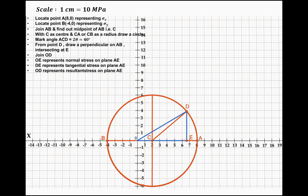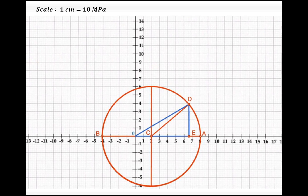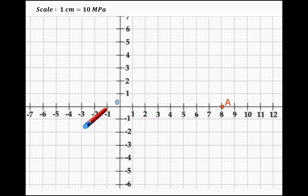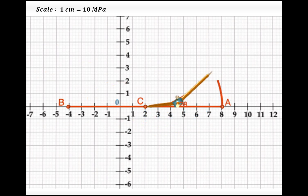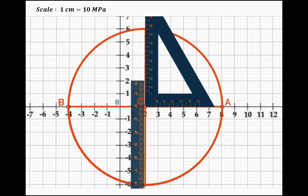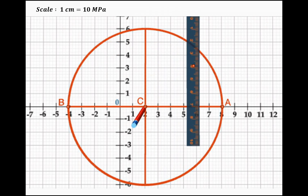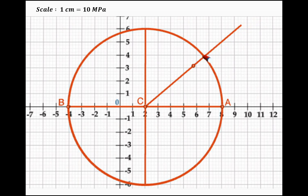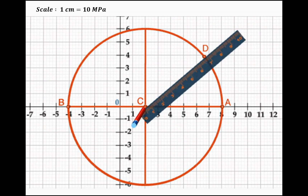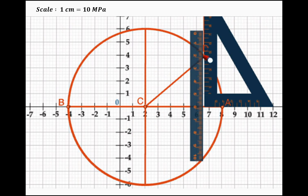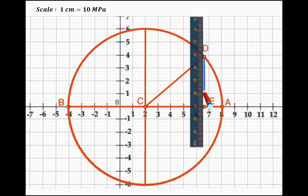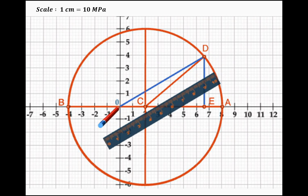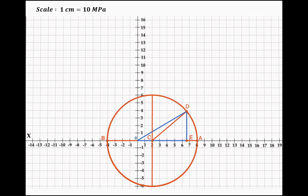Now let us see with the help of animation how to draw this Mohr's circle. First we locate point A and point B, then join these points and locate the midpoint C. With C as center and CA as radius, draw the circle. Mark an angle of 40 degrees, which intersects the circle at point D. From point D draw a perpendicular intersecting AB at point E. Join DE and then join O with D. OE represents normal stress, DE represents tangential stress, and OD represents resultant stress.